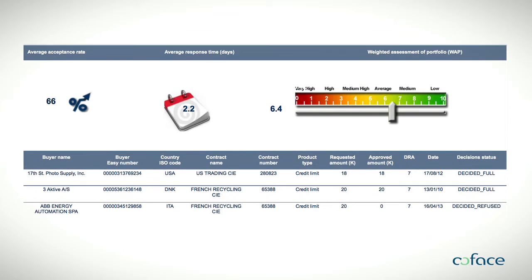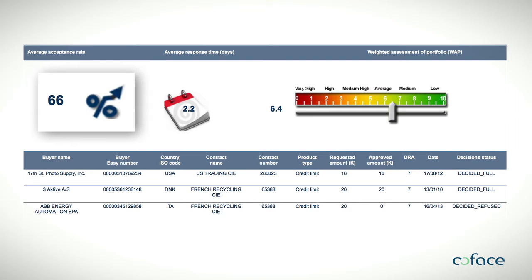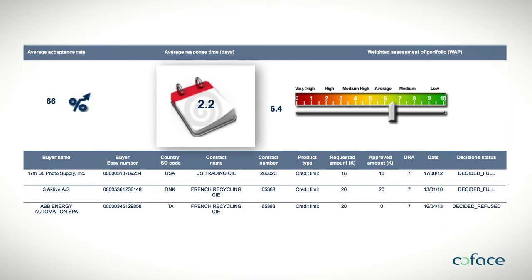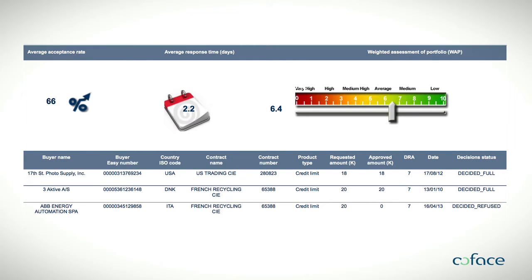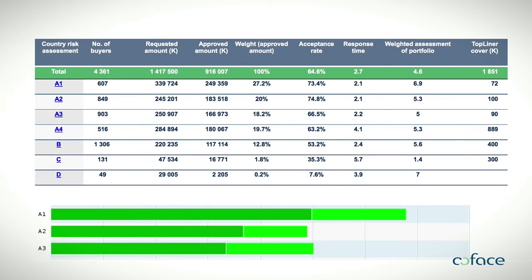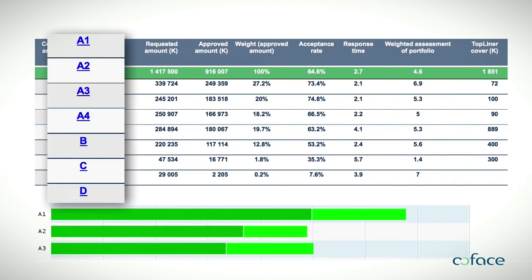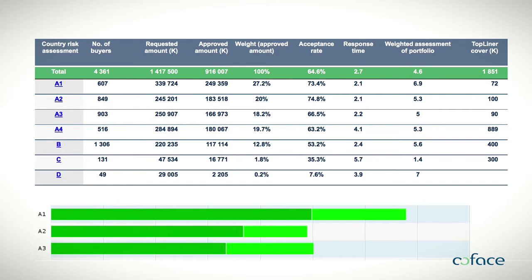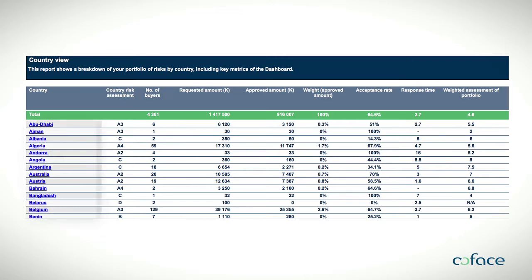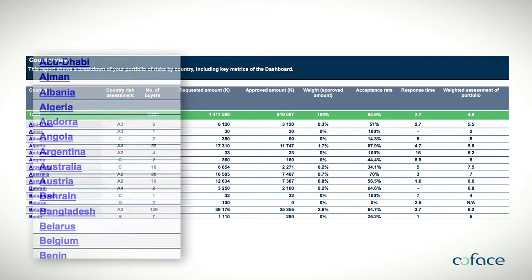You can assess each category through key performance indicators, such as the acceptance rate and the average response time. Should you need to fine-tune your credit management per level of country risk, you can display your portfolio by country risk assessment or by countries in which you are doing business.